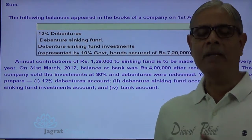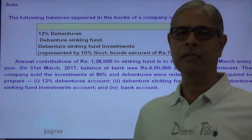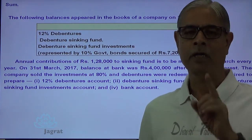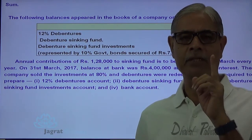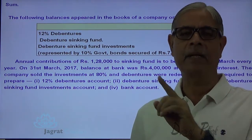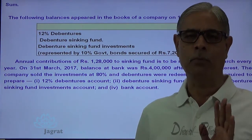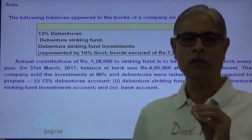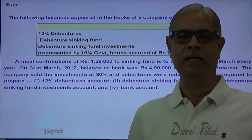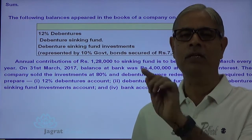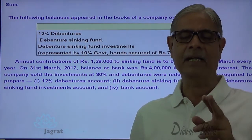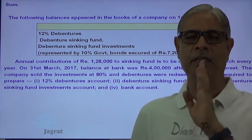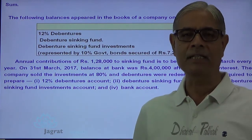Now, how are we going to solve this sum? First of all, I will open 4 accounts as required: debenture account, sinking fund account, debenture sinking fund investment account, and bank account. I am going to write down the balances given to me in all these 4 accounts. After that, I will start recording transactions. First transaction: annual transfer to sinking fund. Second transaction: interest received on sinking fund investment at the end of the year.